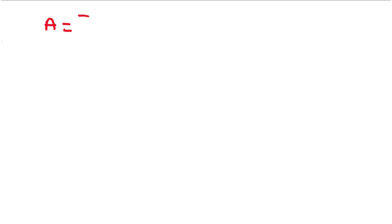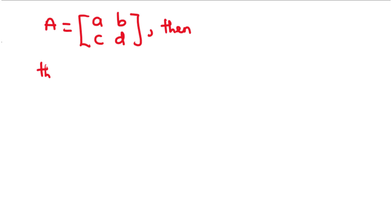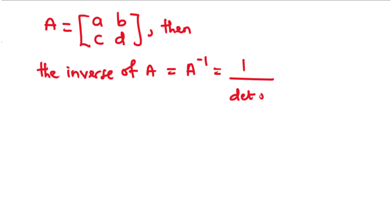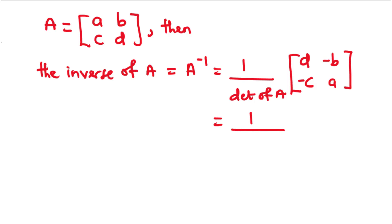Given that matrix A is equal to A, B, C, D, then the inverse of matrix A — written as A inverse — is equal to 1 over the determinant of A times the matrix D, negative B, negative C, A.